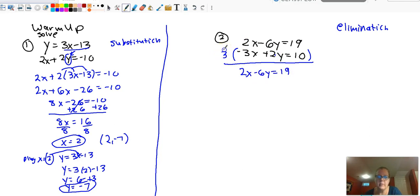Nothing changed on the first one. We basically distribute that 3 to each term. It becomes negative 9x plus 6y equals 30. Again, you don't do elimination unless either the x's or y's are opposite. And in this case, we do have our y's opposite each other. So we're going to have 2x minus 9x, which is negative 7x, equaling 49. When we divide by negative 7, my x value of the solution is negative 7.